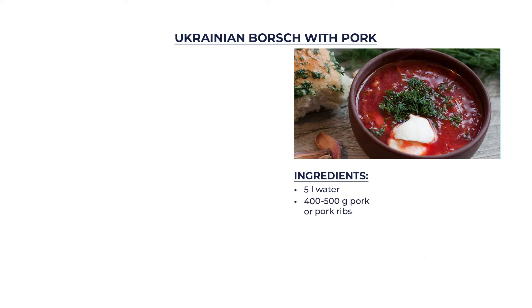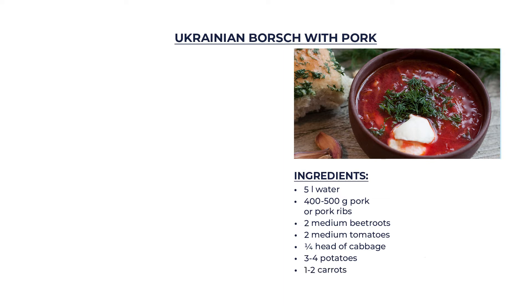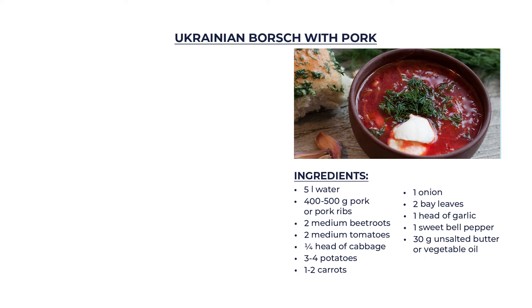Ukrainian borscht with pork. Ingredients: 5.5 liters of water, 400 to 500 grams of pork or pork ribs, 2 medium beetroots, 2 medium tomatoes, 1 fourth head of cabbage, 3 or 4 potatoes, 1 or 2 carrots, 1 onion, 2 bay leaves, 1 head of garlic, 1 sweet bell pepper, 30 grams unsalted butter or vegetable oil, 2 tablespoons tomato paste, salt to taste.